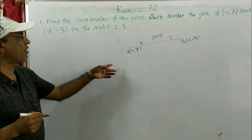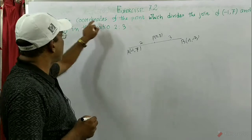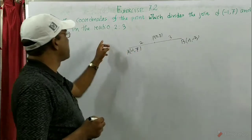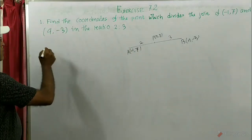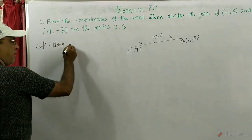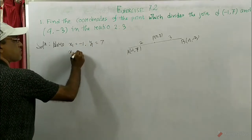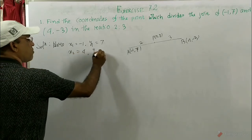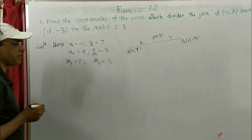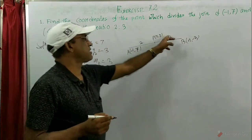So two points are given and we want to find this point — find the coordinates of the point which divides the join of A and B in the ratio 2 is to 3. So in the solution: x1 = -1, y1 = 7, x2 = 4, y2 = -3, and m1 = 2, m2 = 3. These are given.